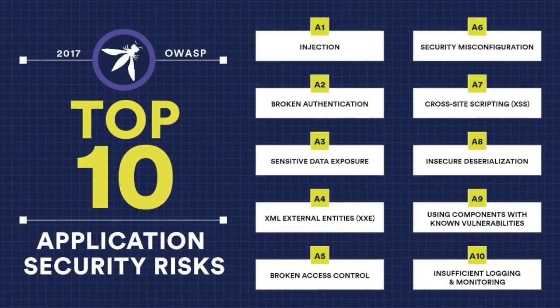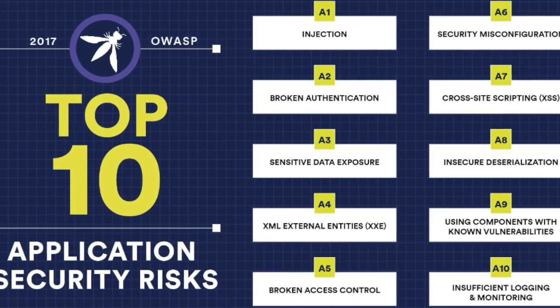Now that we understand what cross-site scripting attacks are and we've seen examples of even big companies who've become victims, it's really important that you learn how to protect yourself in your own applications. If you're not already familiar with the OWASP Top 10, it's definitely a resource I'd recommend you read more deeply about, as cross-site scripting is one of the top 10 most common vulnerabilities web applications are susceptible to. Tools like OWASP ZAP or Burp Suite can be automated in your CI/CD pipelines to do dynamic application security testing.